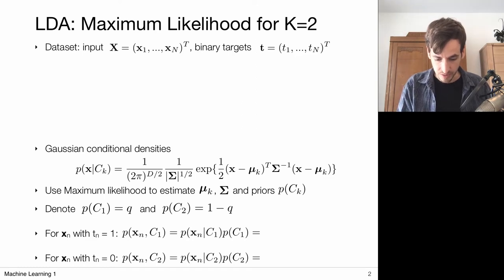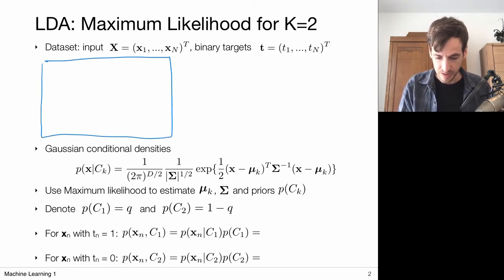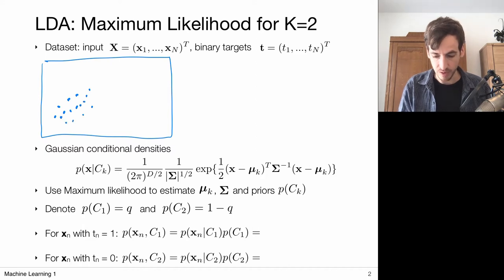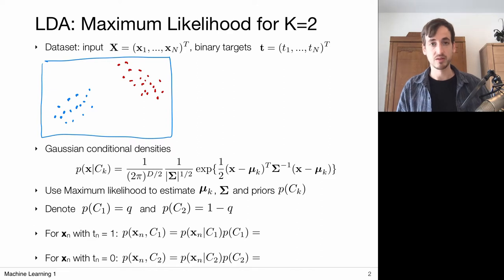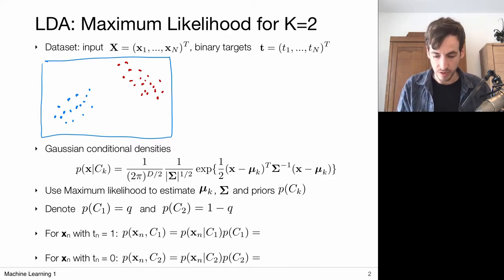So we have a bunch of data samples on these axes, and some of those came from class 1 — indicated in blue — and some of these data points came from the second class. The red points belong to class 2, let's say t=1, and the blue points belong to t=0, the first class.